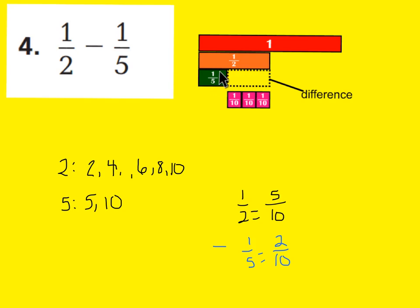1 fifth is equal to 2 tenths. And that's why in this portion right here, you could have fit 2 tenths. Divide it right down the middle and you'd have 1 tenth, 2 tenths. So, imagine that this is 5 tenths and this is 2 tenths. Well, what's left over? 5 tenths minus 2 tenths is 3 tenths. And that's why the difference would be 3 tenths.